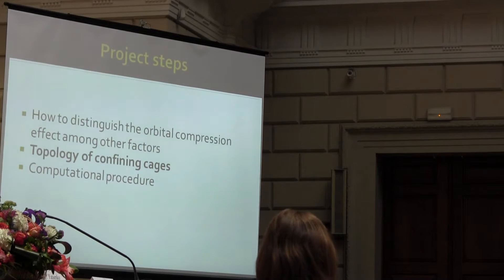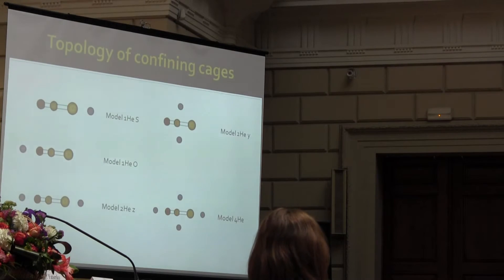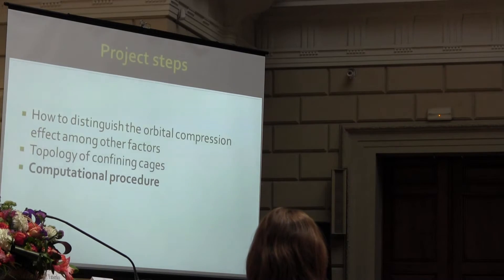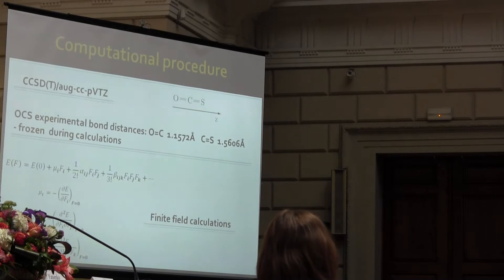The next thing is to focus on confining cages. As I said, I was mainly interested in the analysis of how the orbital compression anisotropy influences the studied properties. So I used a different number of helium atoms in different orientations and different distances to carbon sulfide.